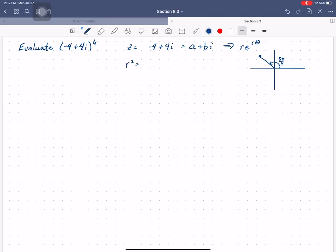I know that r squared equals a squared plus b squared. So r squared equals 32. So r equals 4 square root 2. Yes? Okay.